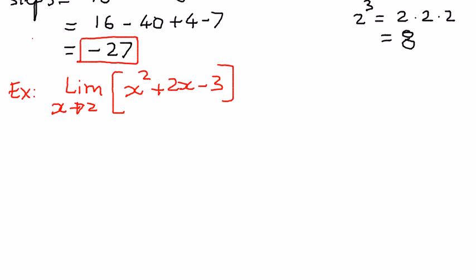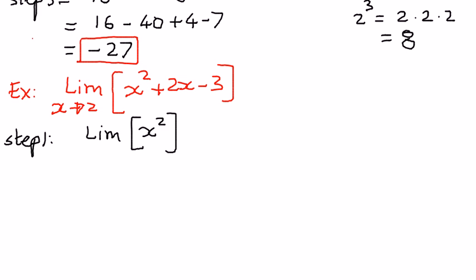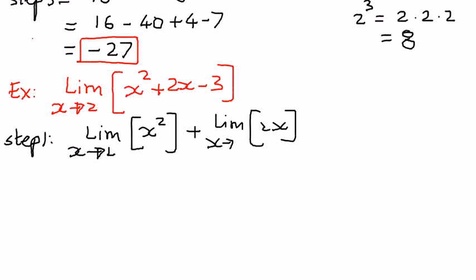We can follow the same steps as the previous example. In step number 1, we write them out as individual limits: the limit of x to the power of 2 as x approaches 2, plus the limit of 2x as x approaches 2, minus the limit of the constant 3 as x approaches 2. We have expanded it out in a proper manner.